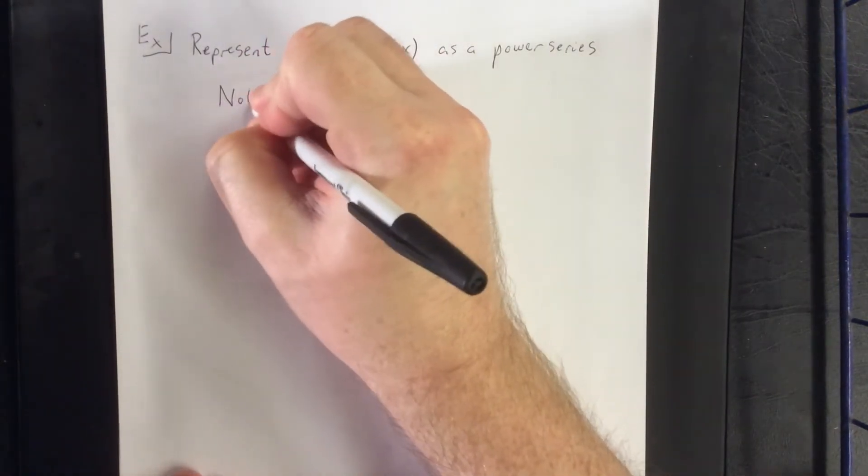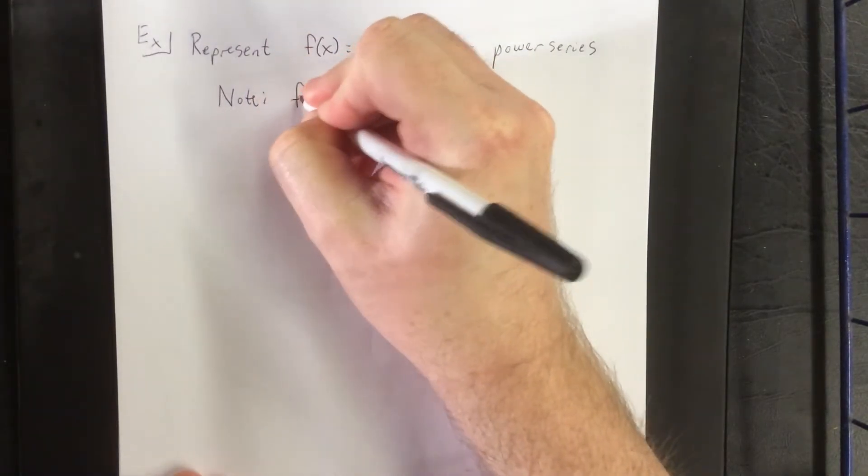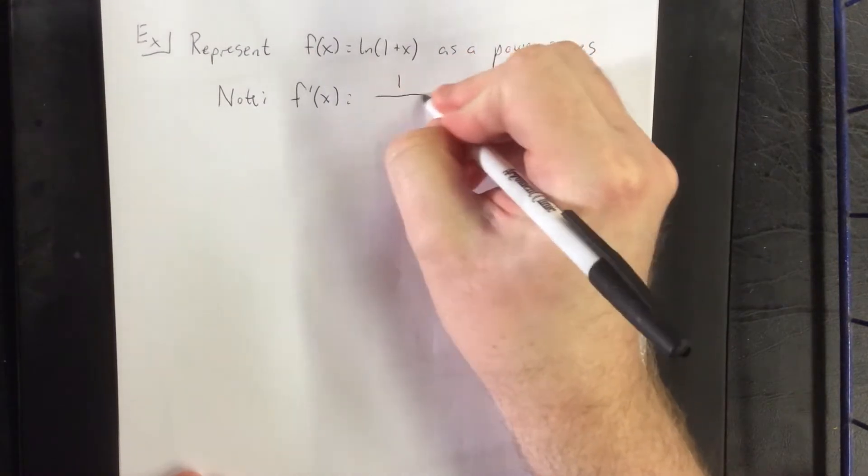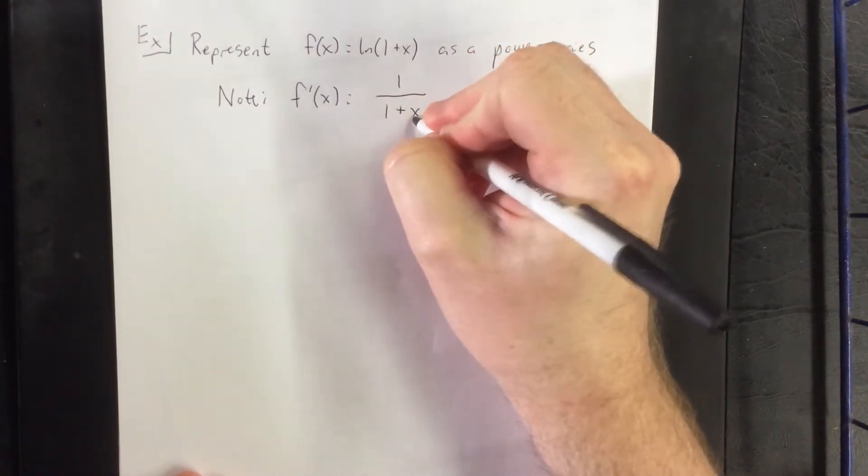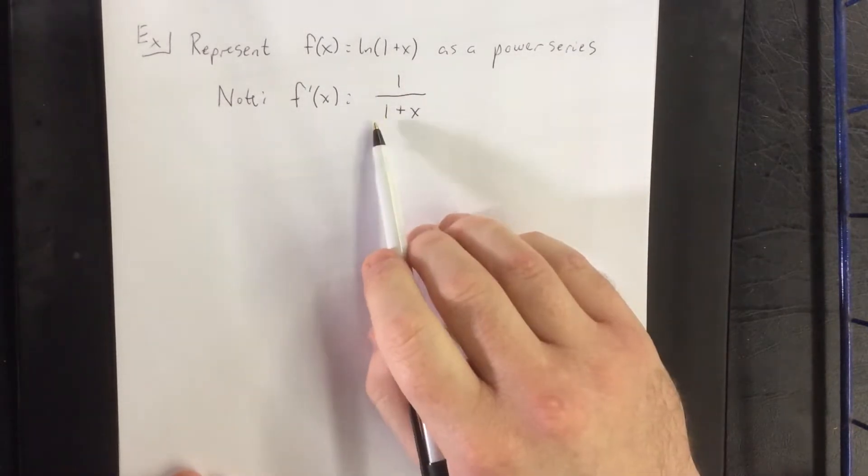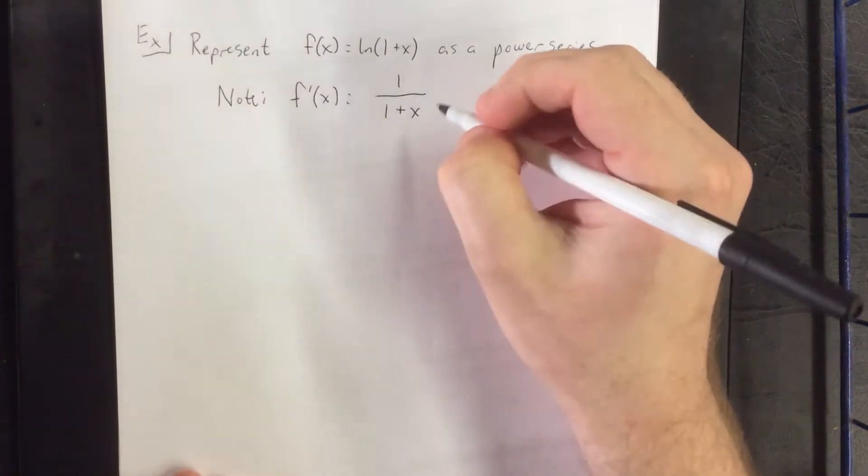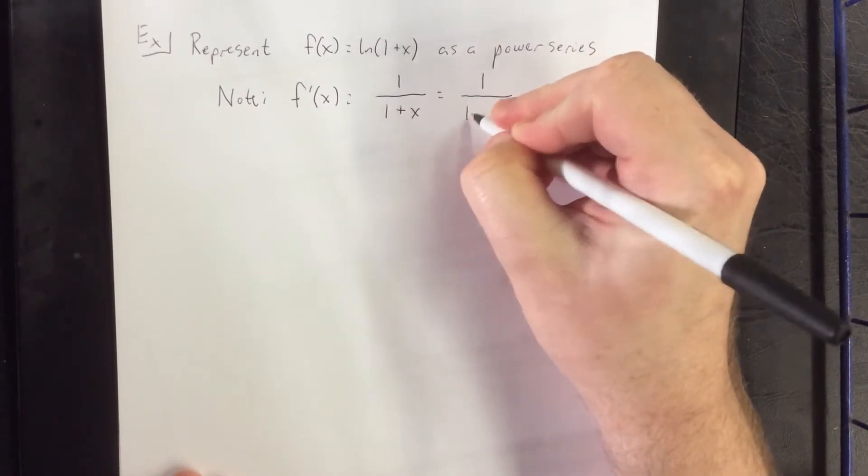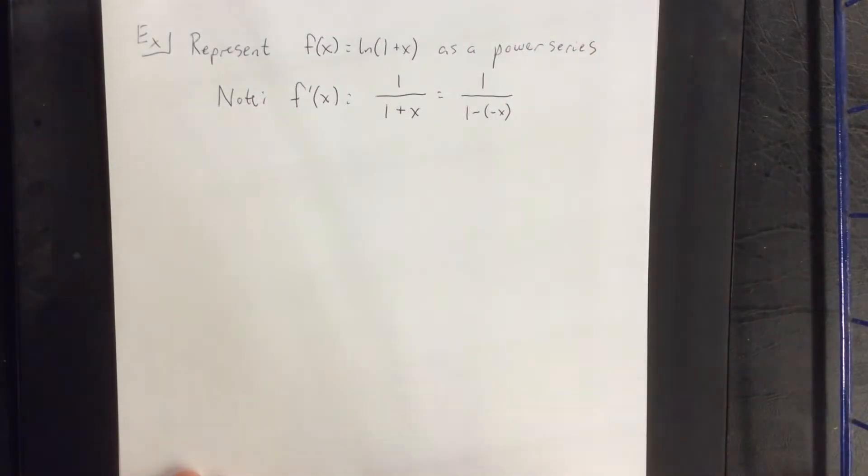However, I also note that if I were to take a derivative of this we would have something much more closely resembling something for a power series. Now this would be considered 1 over 1 plus x. However, to put it in the appropriate form for a power series I need it in the form 1 over 1 minus something. So I'm going to go ahead and change that to a negative x.